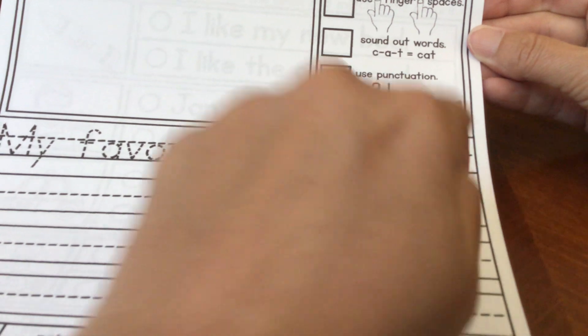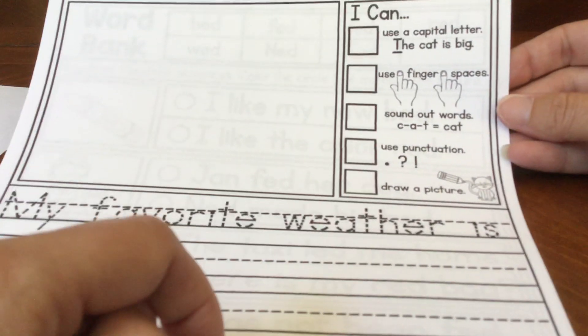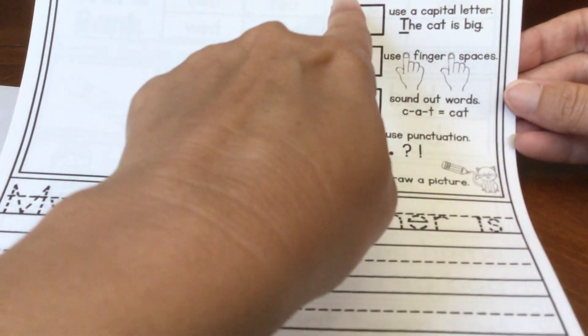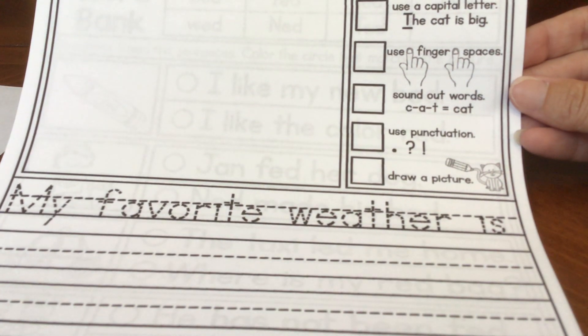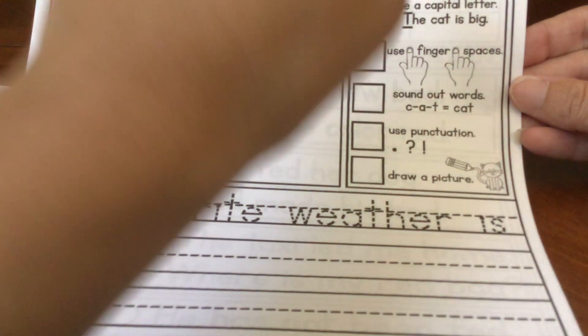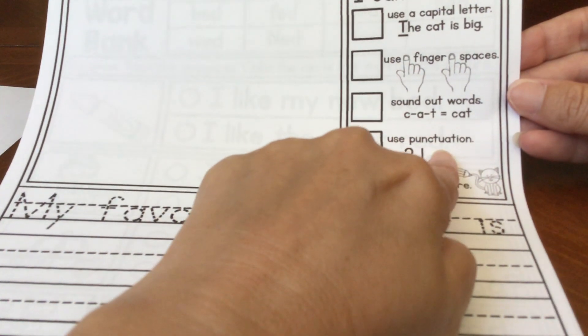So when you write a word, leave a space after it before the next word. I can sound out words. Whatever you want to write, you've got to make the sounds and then write the sounds that you hear.